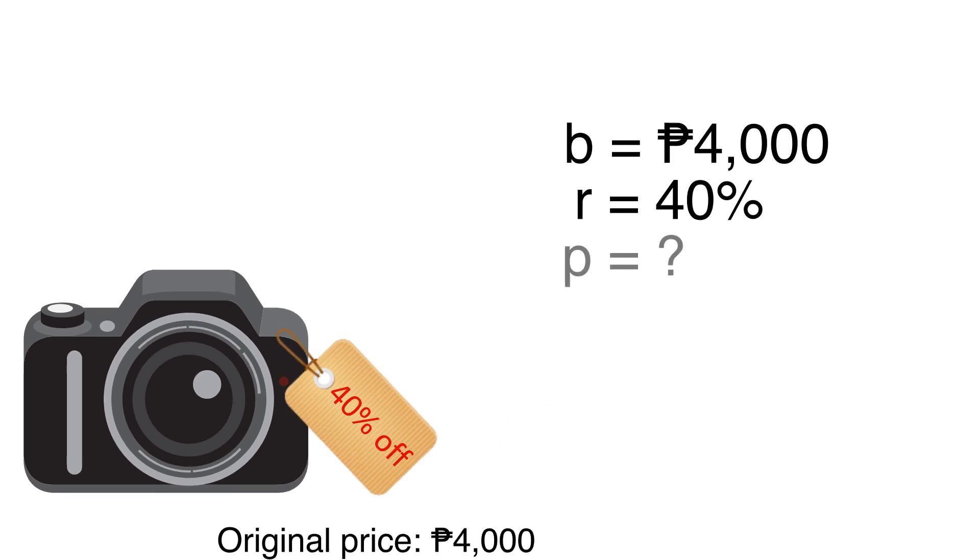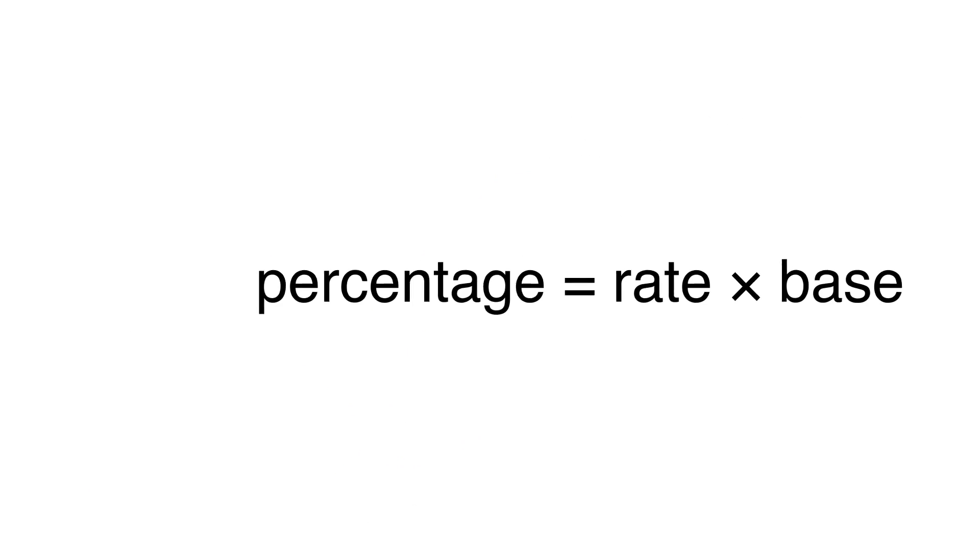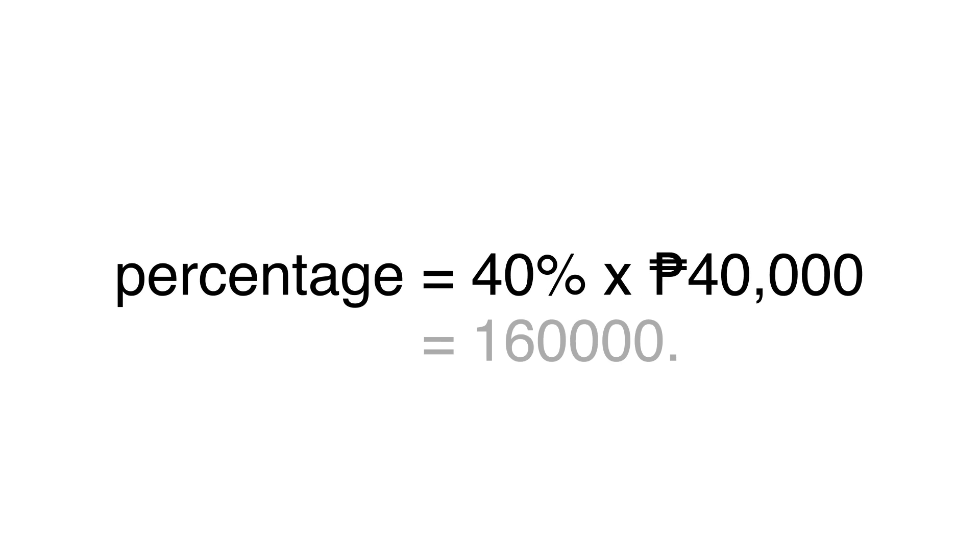Since we are missing a percentage, we can multiply 4,000 pesos by 40%. Don't forget that when multiplying by a percent, we move the decimal point of the product two times to the left.